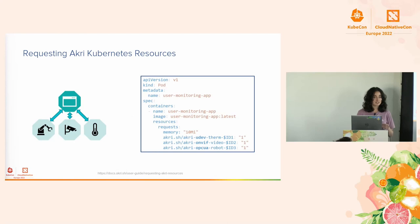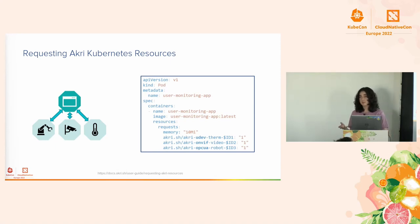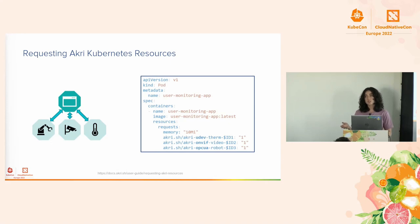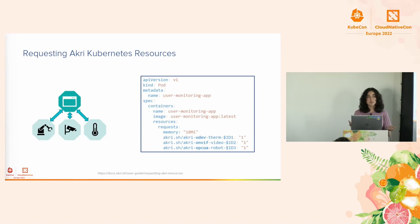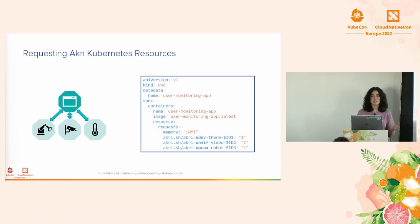Looking at the details: we discover a device, then create a Kubernetes resource to represent it. Just as you could declaratively request CPU and memory in your pod spec — requiring that workload be scheduled only to a node with those resources — Akri extends that to the IoT space. You can also request an IP camera. Say you have a monitoring application that needs a USB thermometer, an IP camera, and a robot arm. With Akri, after discovering those devices and creating those resources, you add them to your pod spec alongside compute resources, and Akri ensures it's scheduled only to nodes that can see those devices.